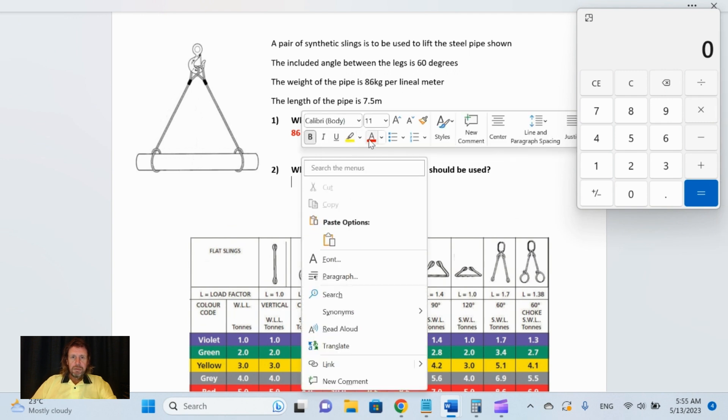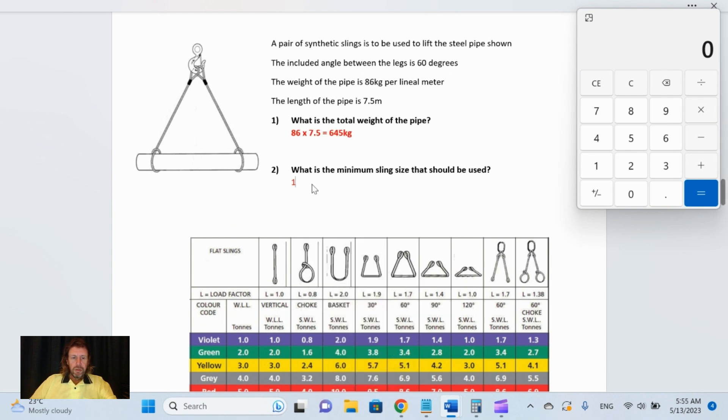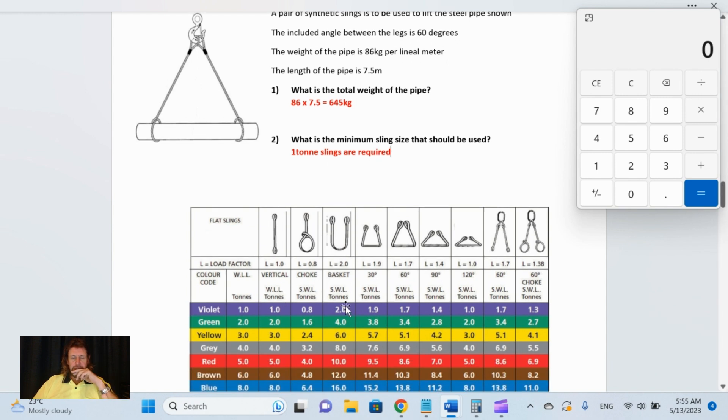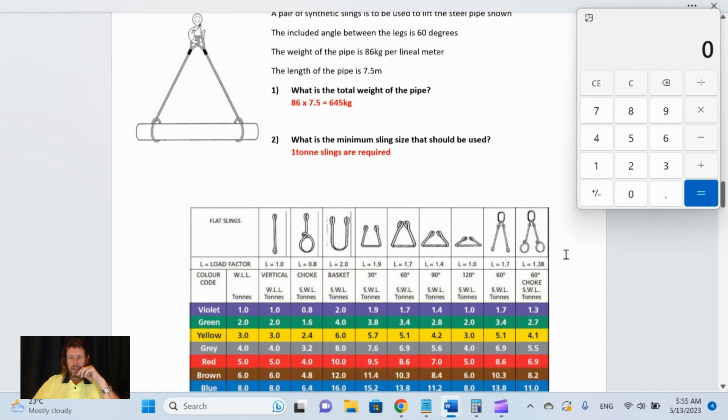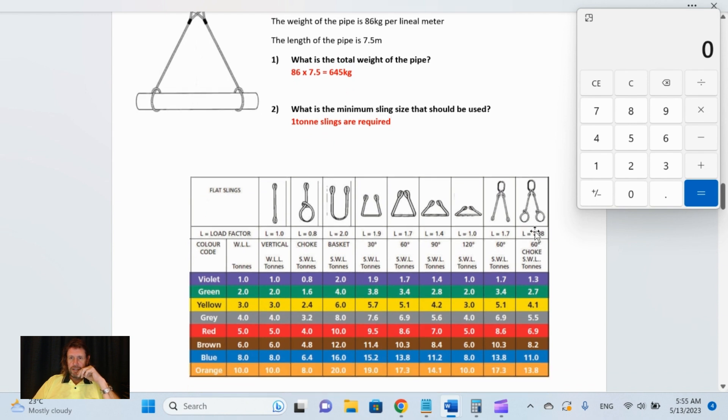If you go along over here, we need one ton slings. So the answer to this question is one ton slings are required. Yes, we need two of them, but when you answer this in your exam, you need to find out the choke and the angle factor, but you go down here and whatever you're rounding it up to, you need to go across to this side and pick it off this one here because it's a violet one ton sling.